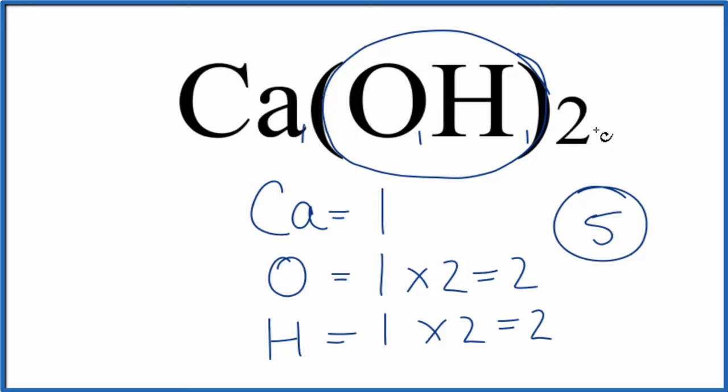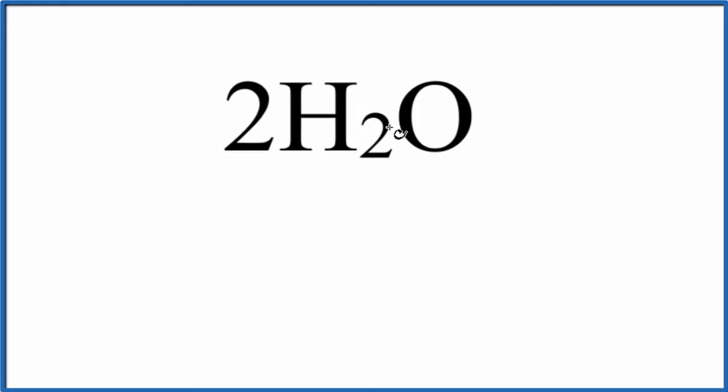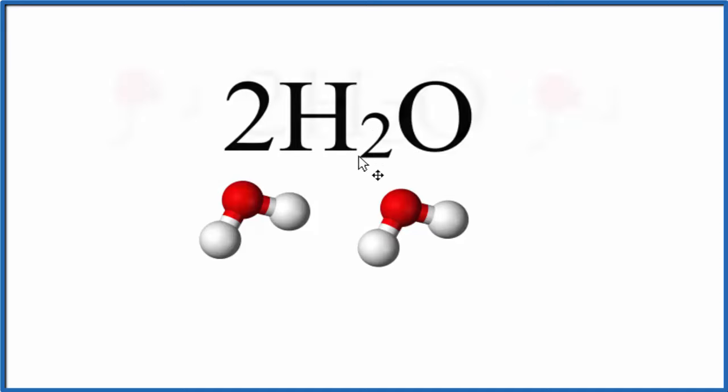What if we have a number in front of the formula, a coefficient like two in front of the formula? We know what our subscripts mean. They tell us how many of the element symbol in front we have. And the coefficient tells us that we have two separate water molecules. So there are two ways we could do this. We could figure out the number of atoms in H2O and multiply it by two, or we could do this all at once.